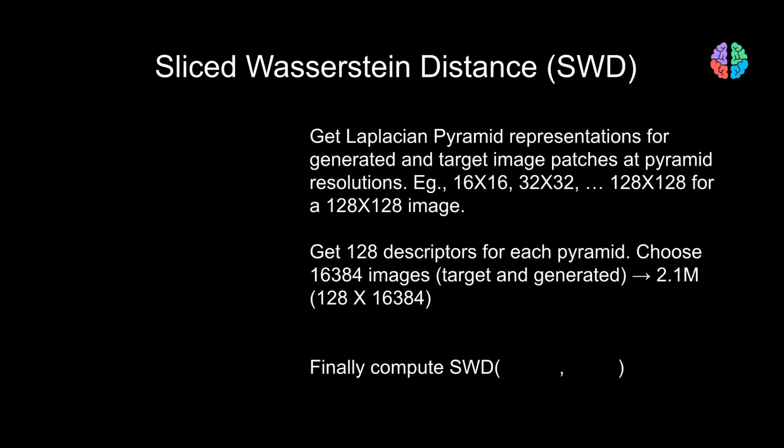Right, those were the tricks used in the paper to improve the quality and variation. In terms of evaluation of GANs, people have been using Multi-Scale Structural Similarity Metric or MS-SIM. However, MS-SIM doesn't seem to capture smaller effects. When we are dealing with very high resolution images like 1024 by 1024, it becomes important.